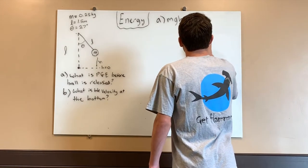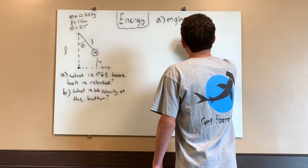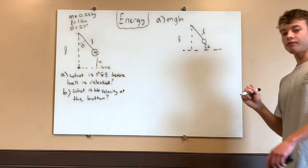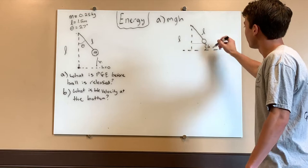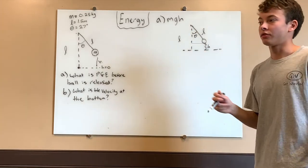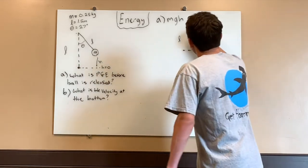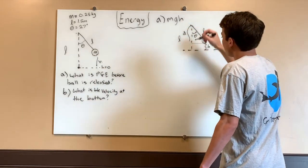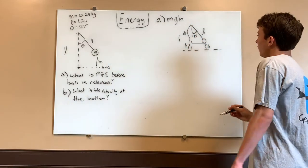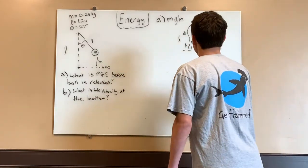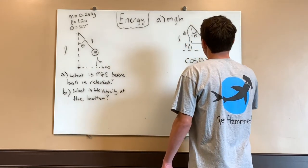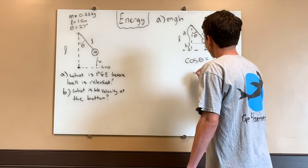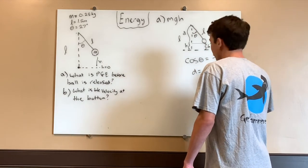So I'm going to redraw the situation here. We have our string length but we don't have our height h. We do have the angle that this string is making. So we can break down the total side length into D, which is the distance from the pivot to the ball horizontally, and then our h, which is what we're looking for. We can use cosine of theta equals D over the side length L, so solving for D we get D equals L cosine of theta.